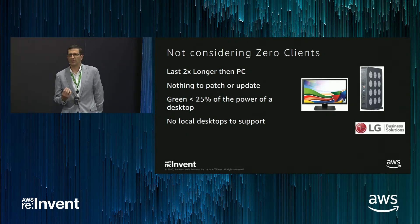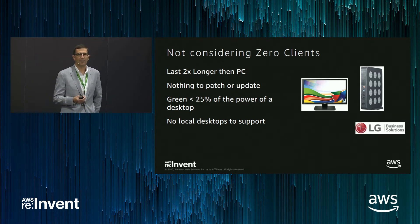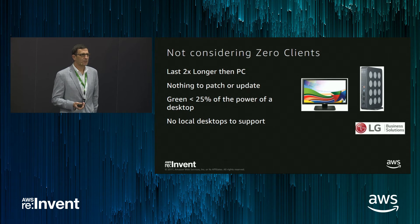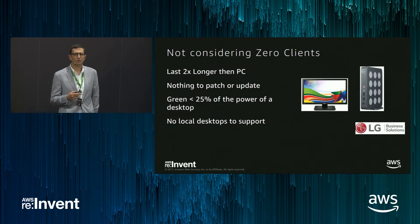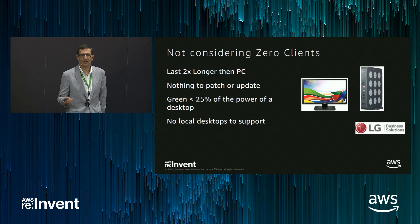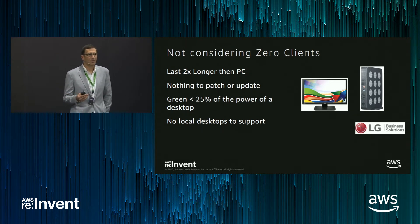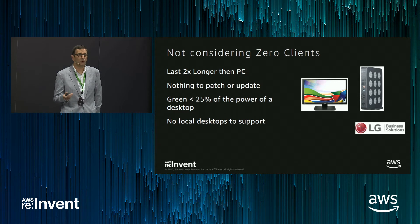Another common mistake is customers planning to just use their existing endpoints — continuing to use their desktops. That is a fine transition model; you can put the Amazon WorkSpaces client on any Windows or Mac desktop. But many times those customers will neglect those endpoints and treat them like dumb terminals. If you're running that endpoint as a Windows desktop, you still need to license it, patch it, manage it, support it, and put antivirus on it. You're effectively running and supporting two desktops.